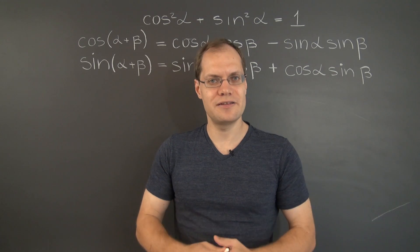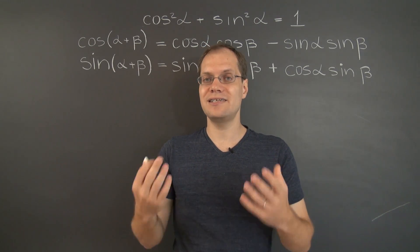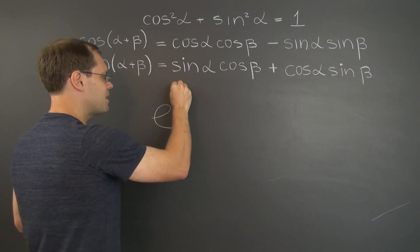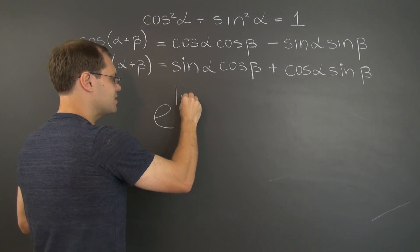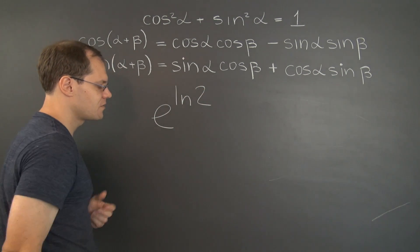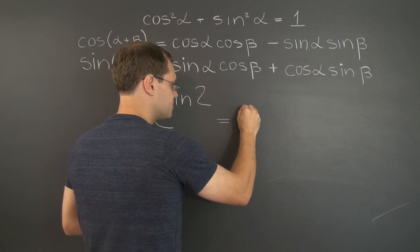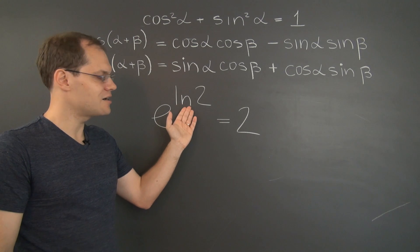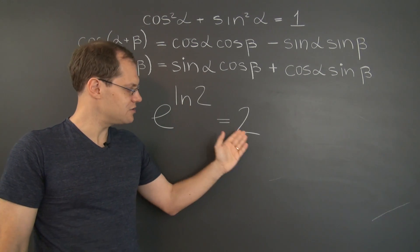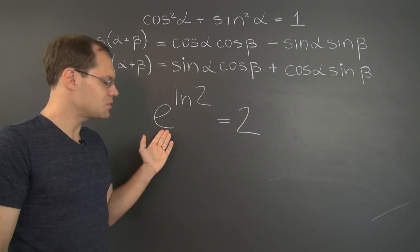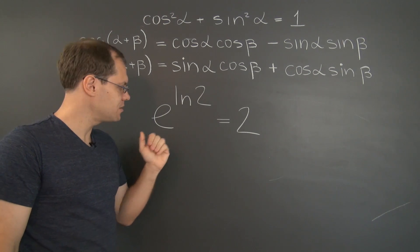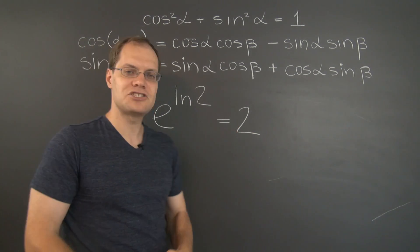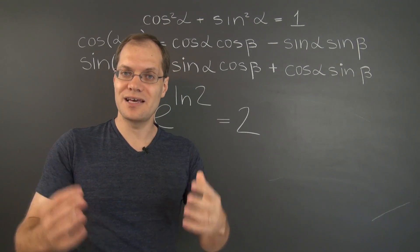I would like to let you know that the general answer to this question is yes, because e to the power of the natural log of 2 of course equals 2. Meanwhile, e is irrational and log of 2 is irrational, and 2 is of course rational. So what we have is an irrational number to an irrational power is a rational number. So the answer is yes, it's possible.